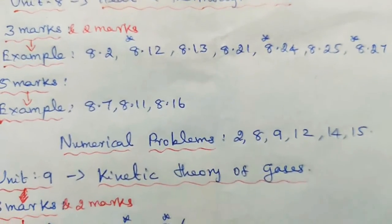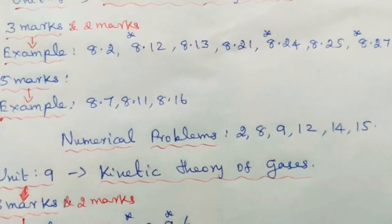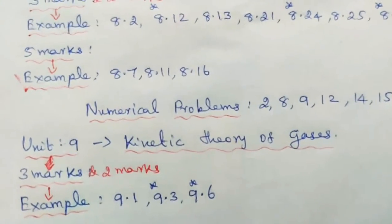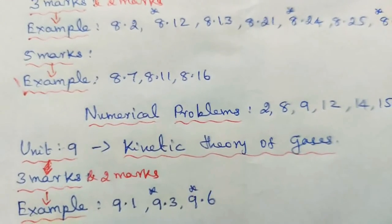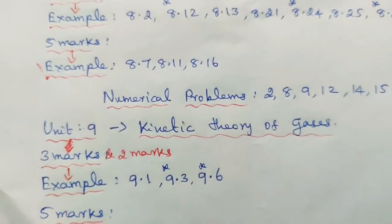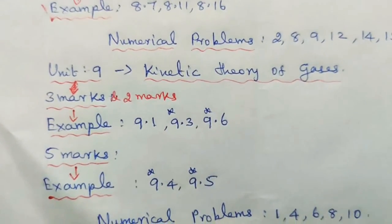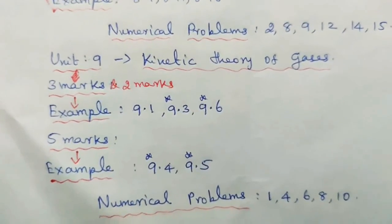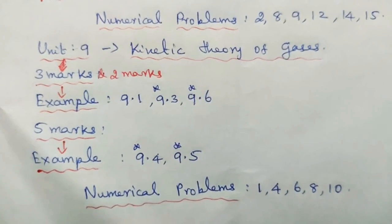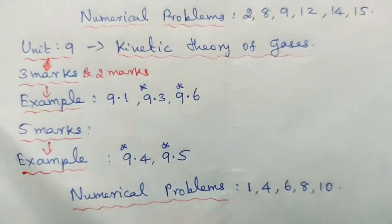Then Unit 9: Kinetic Theory of Gases — 2 marks and 3 marks. Example problems: 9.1, 9.3, and 9.6. Then 5 marks example problems: 9.4 and 9.5. Then numerical problems: 1, 4, 6, 8, and 10.